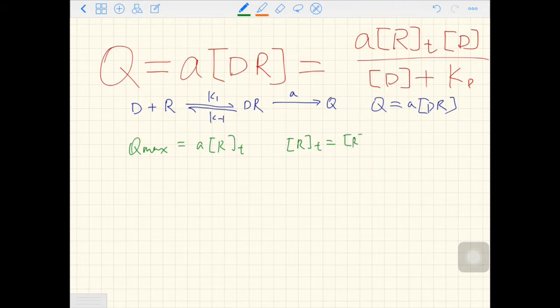One is the free form of R, and the other is the binding form of receptor, DR. When all the receptors, RT, are in the DR form, the system will achieve the maximal response. So we can rewrite this equation.